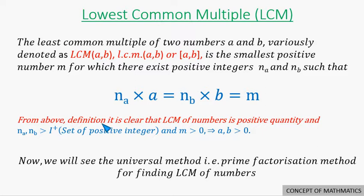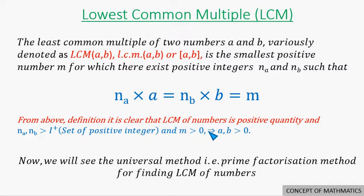From the above definition, it is clear that the LCM of numbers is a positive quantity. N_A and N_B are obviously positive integers and M is greater than 0. This implies that our numbers A and B must be greater than 0.